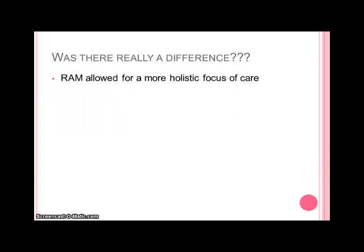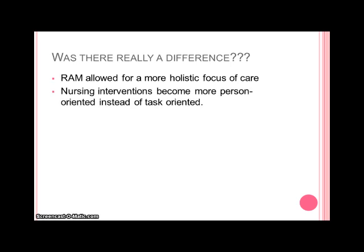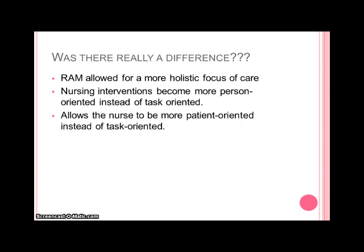So our concluding question: was there really a difference using Roy's adaptation model? Absolutely. Instead of focusing on nursing tasks, using this theory allows us to focus on the patient as a whole, using more of a holistic focus on care. While there are still tasks to perform, we can integrate them into the care instead of compartmentalizing. Focusing on the patient instead of the task allows us to reprioritize our goals and set goals with our patient, not just for them. This is the way nursing care should be provided.